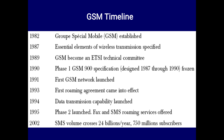In 1993, the first roaming agreement came into effect. In 1994, data transmission capability was launched. In 1995, Phase 2 was launched, offering faxing services, SMS, and roaming services. In 2002, SMS volume crossed 2.24 billion per year and subscribers reached 750 million — showing just how popular this technology became in ten years.